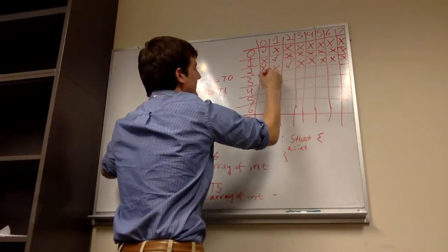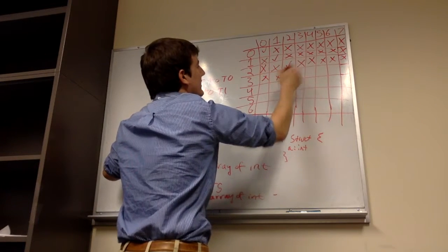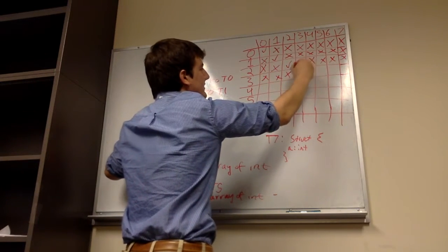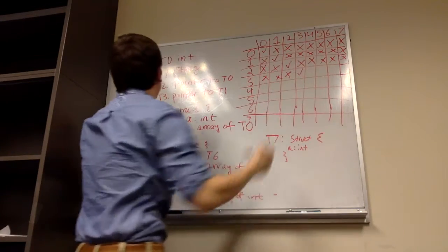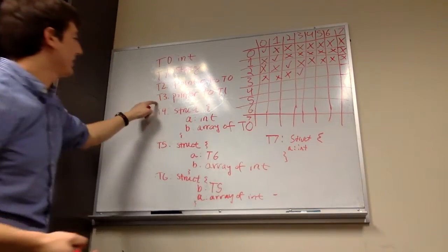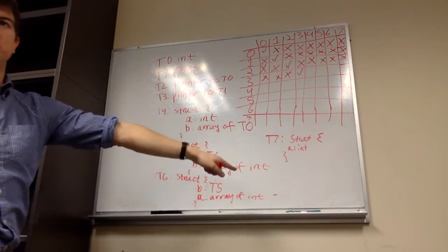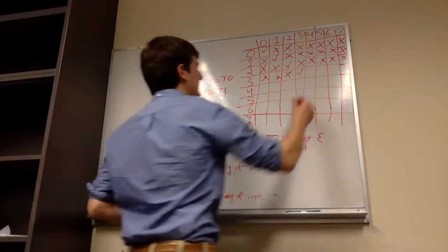T3 and T3: yes, structurally equivalent. T3 is a pointer to all of these structures, so it's never going to be the same as the others. Nope, never going to happen.